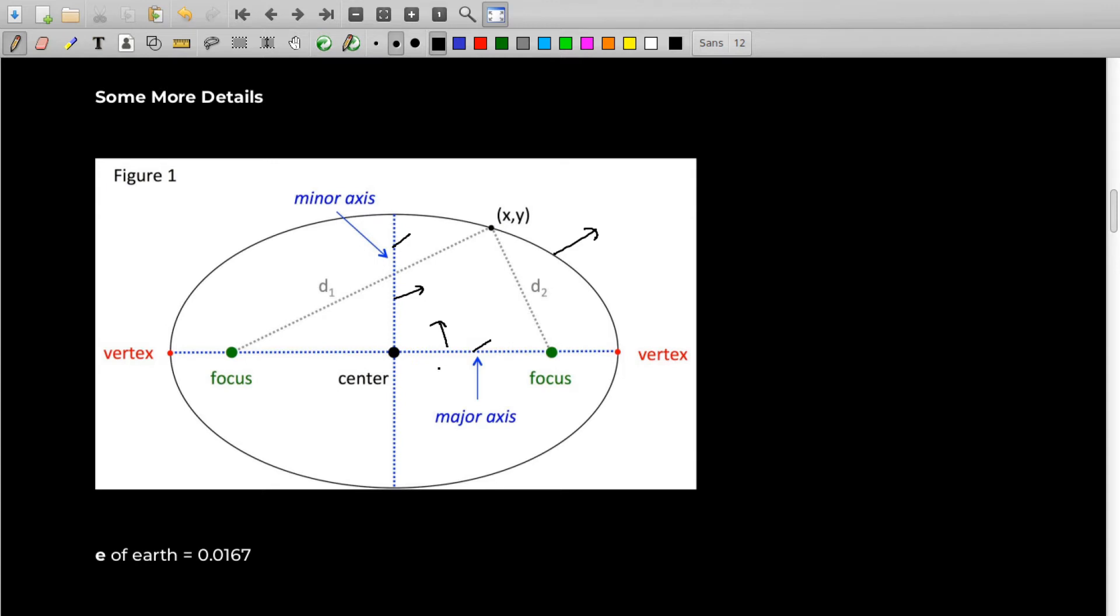This horizontal one is the major axis and the vertical one is the minor axis of the ellipse. Half of the major axis is called semi-major axis, which is generally denoted by a, and half of the minor axis is semi-minor axis, which is generally denoted by b.